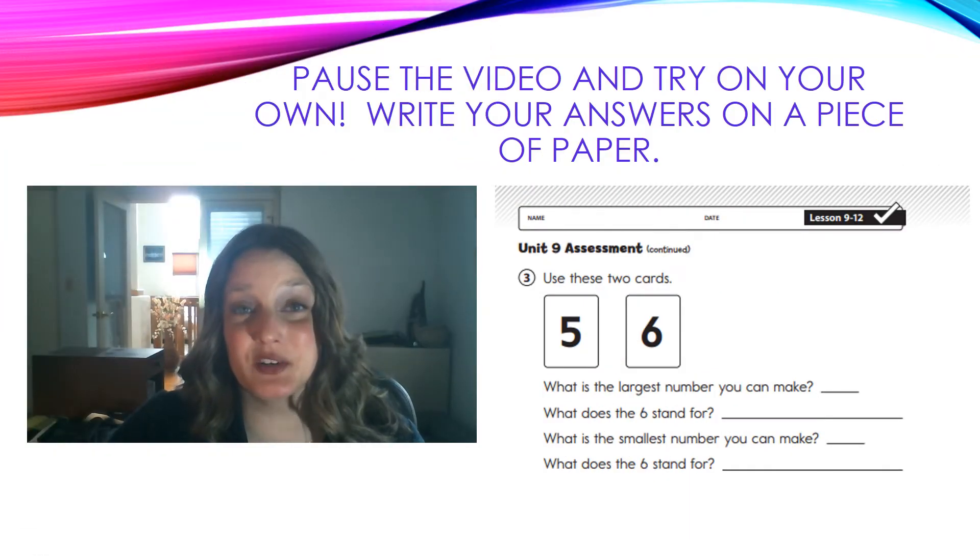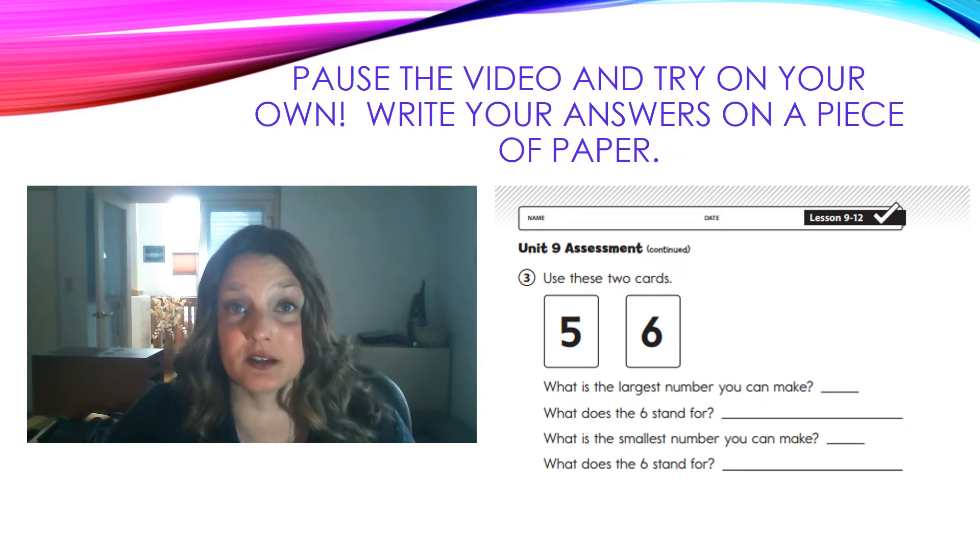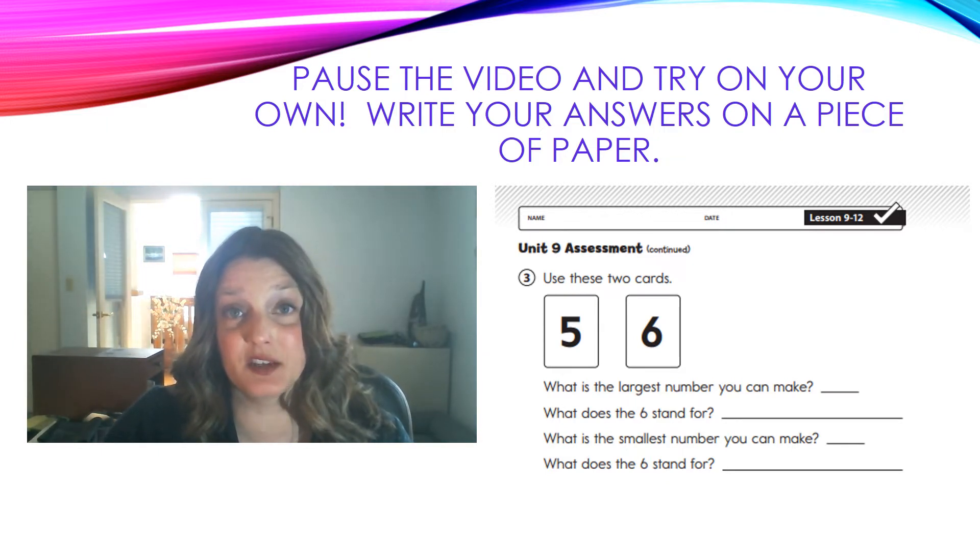Okay, you're doing great. Let's move on to number 3. Use the two cards. One has a 5, the other a 6. Put those cards together to make the largest number you can make. What does the 6 stand for, or how much is the 6 worth? Now, use those same two cards. And what is the smallest number you can make? In your smallest number, what does the 6 stand for, or how much is the 6 worth? Remember, you can pause the video to try this on your own, and write your answers on your paper.